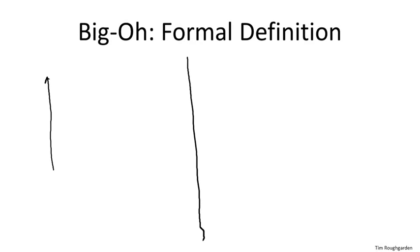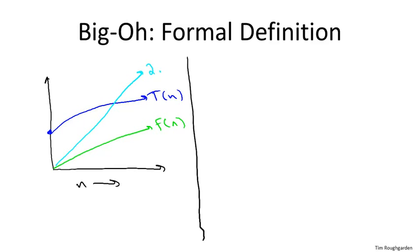So pictorially, you could imagine that perhaps we have T of n denoted by this blue function here. And perhaps F of n is denoted by this green function here, which lies below T of n. But when we double F of n, we get a function that eventually crosses T of n and forevermore is larger than it.